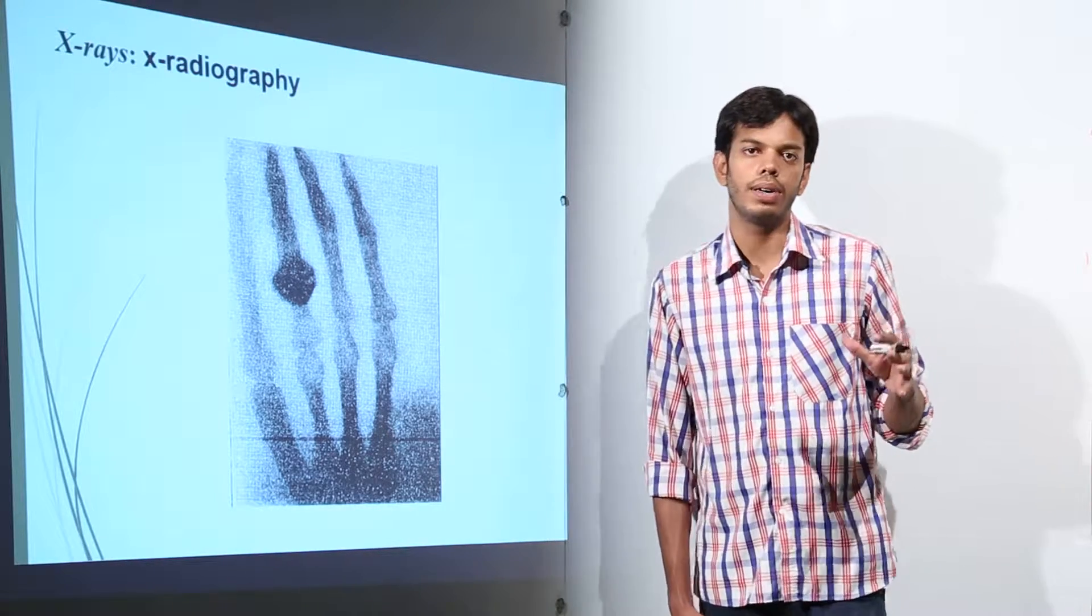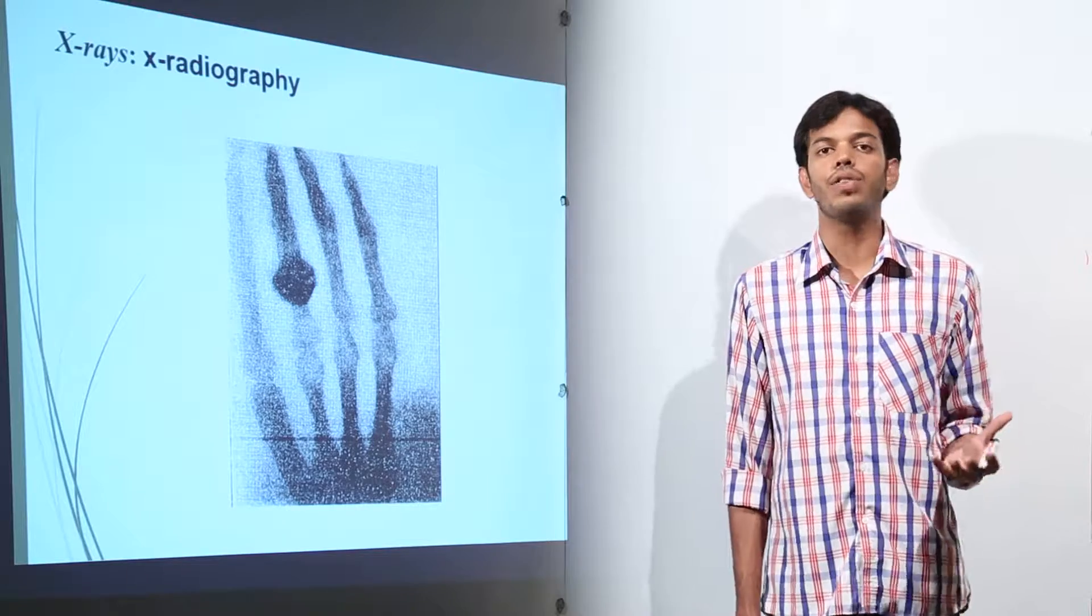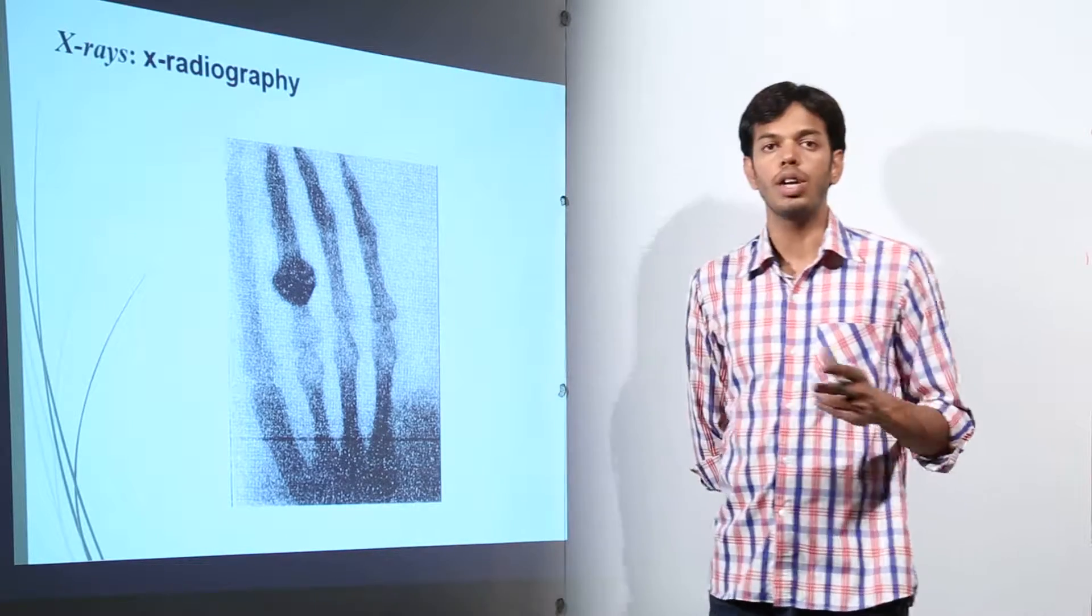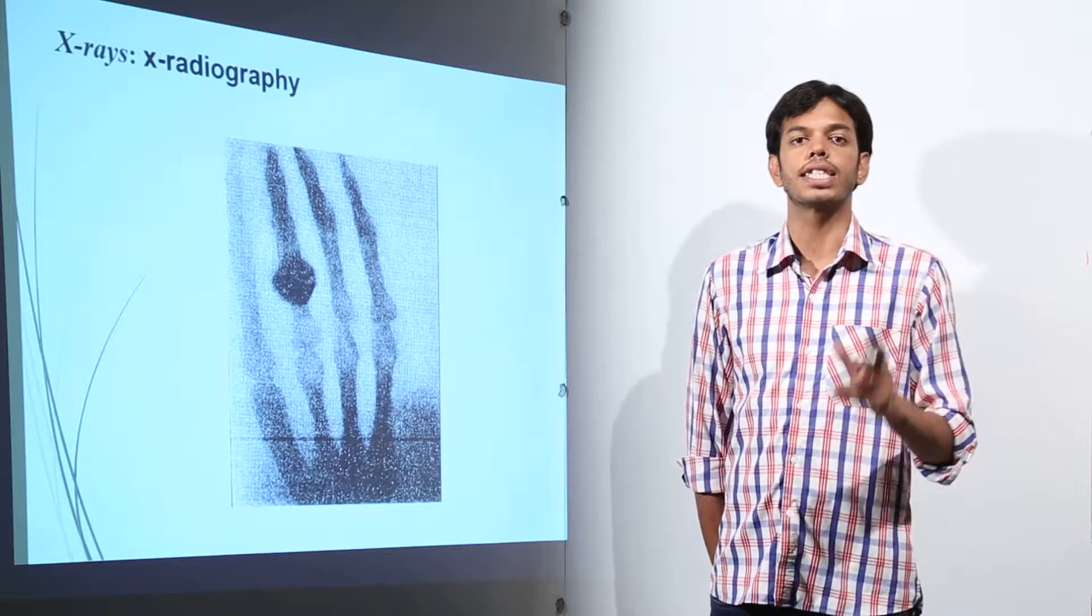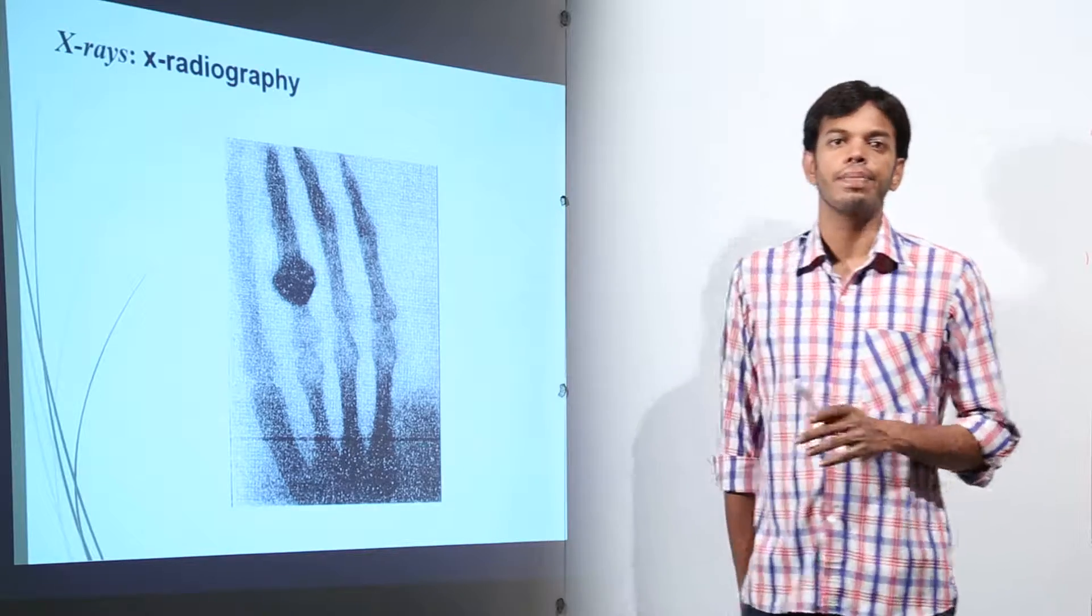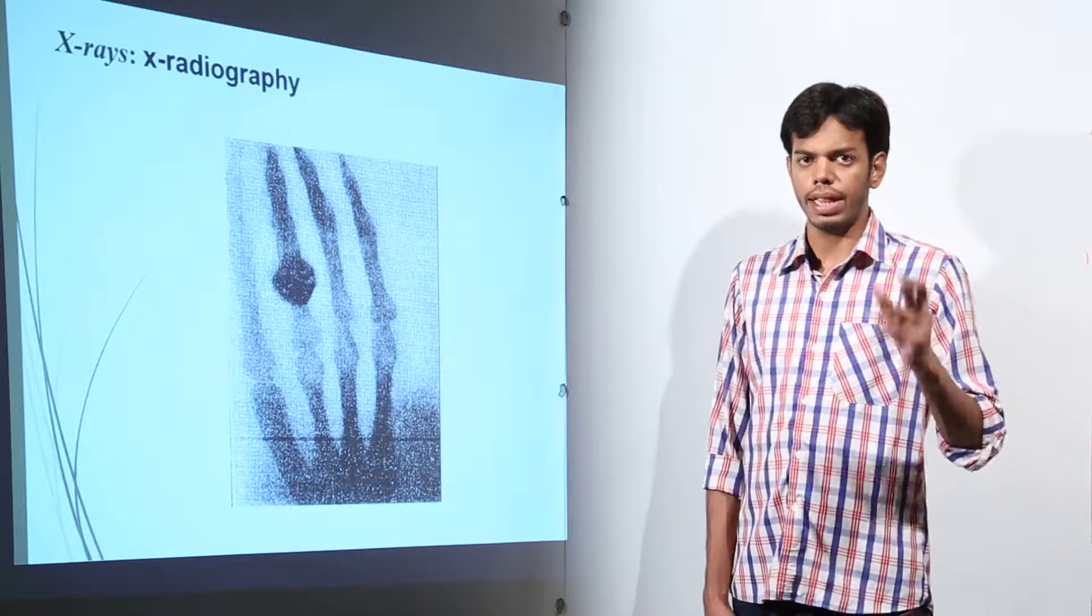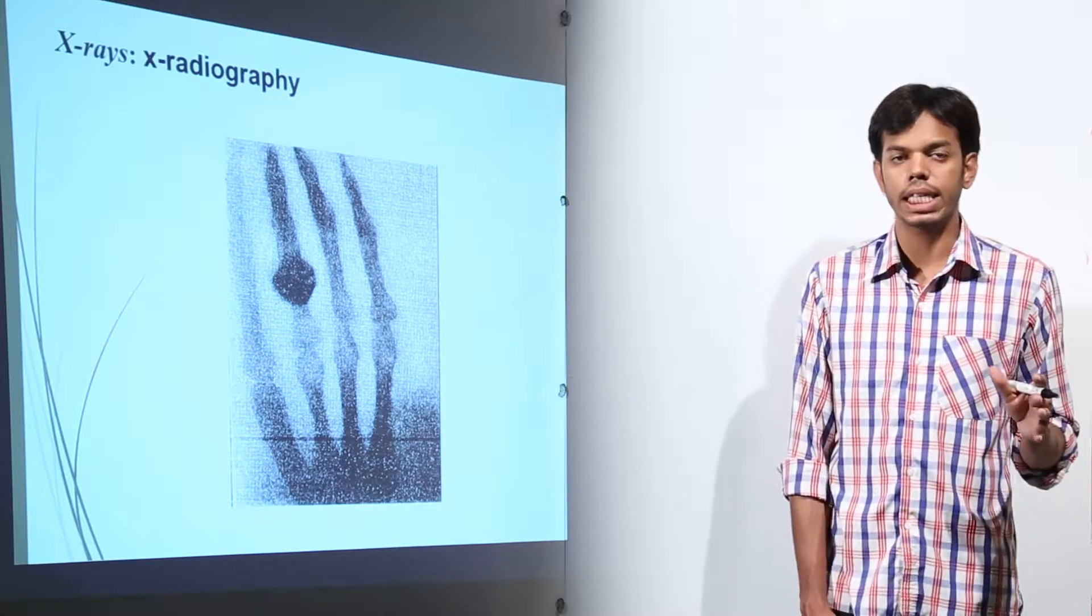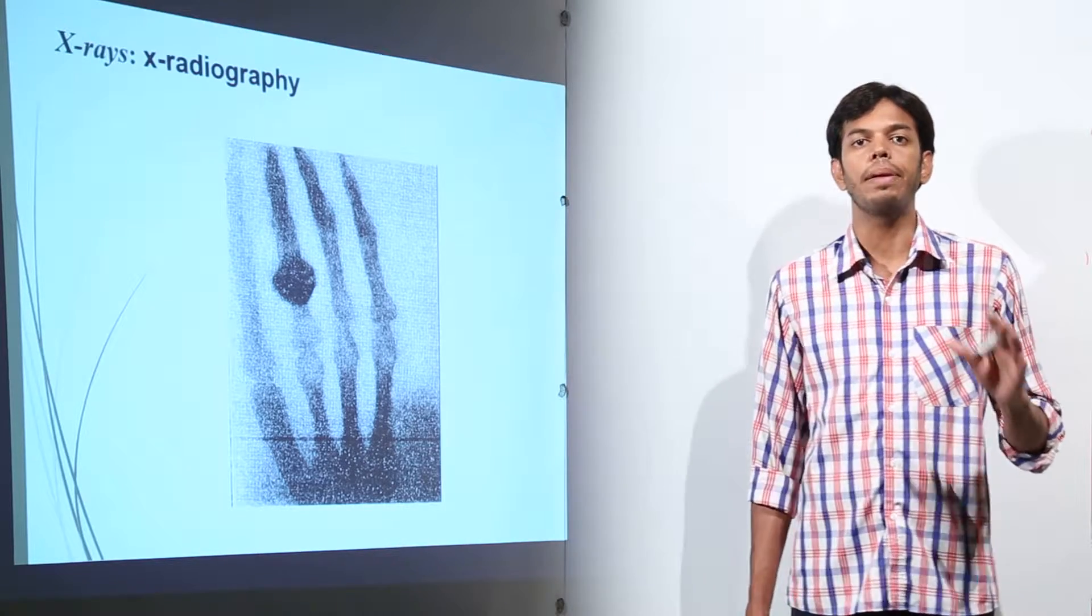So this was the first successful version of x-ray and this image is the result of 15 minute exposure of x-rays on the human hand. Actually, the scientist who did this, this is his wife's hand and that time it was 15 minute exposure. These days, the exposure of x-rays on the human body is not even more than 5 milliseconds.